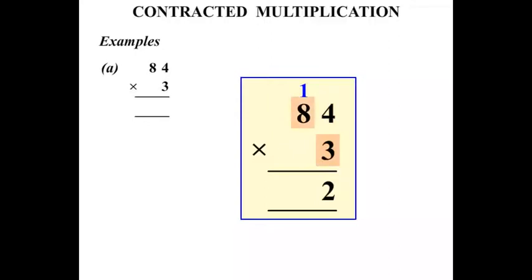3 times 8 is 24 plus the 1 we carried makes 25. And since there's no other calculation to make we just write the 25 in one go there. So the answer there is 252.